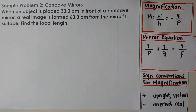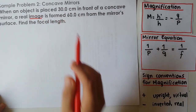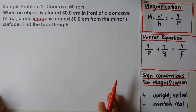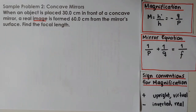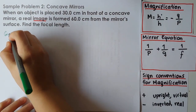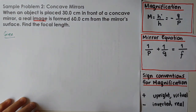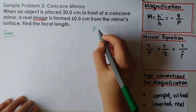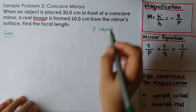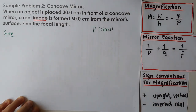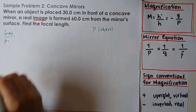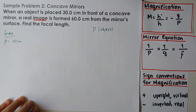We're talking about an object that is placed 30 centimeters in front of a concave mirror. A real image is formed 60 centimeters from the mirror surface. Find the focal length. From this problem, first of all, we're going to write the givens as usual. Here we have an object placed 30 centimeters from the mirror. Remember, P is the distance of the object, so P equals 30 centimeters.